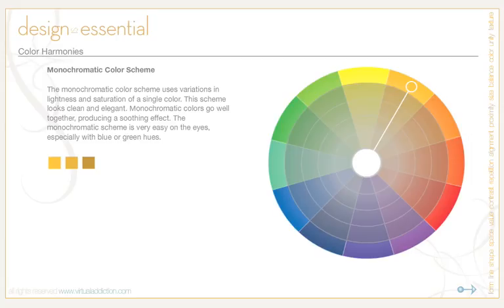Cons of the monochromatic scheme are that it lacks color contrast and is not as vibrant as the complementary scheme. When using it, try using tints, shades, and tones of the key color to enhance the scheme. You can also try an analogous scheme, which offers more nuances while retaining the simplicity and elegance of the monochromatic approach.